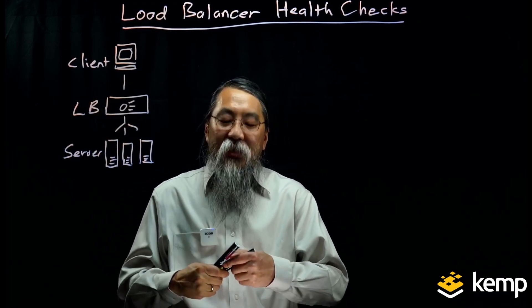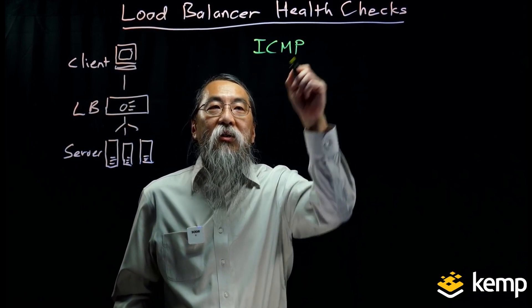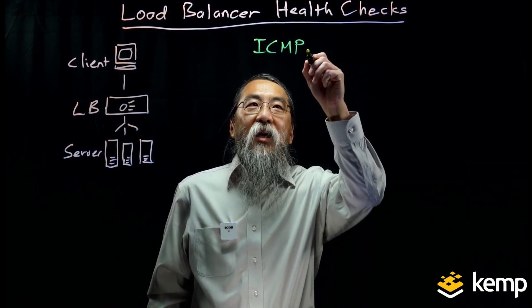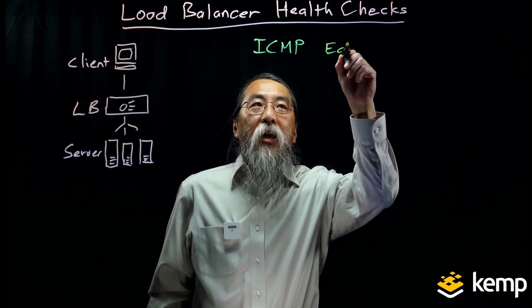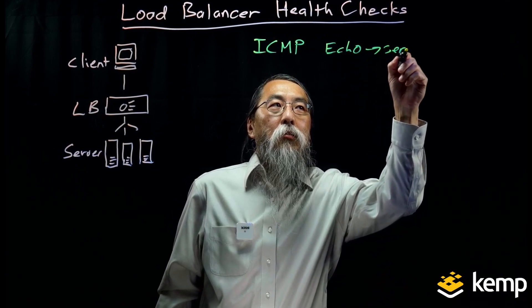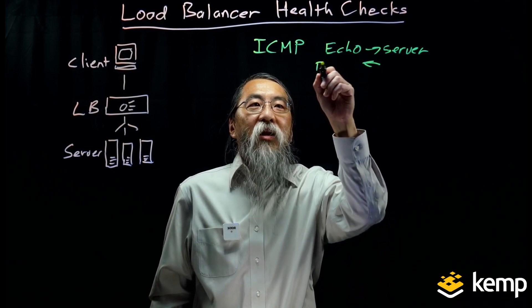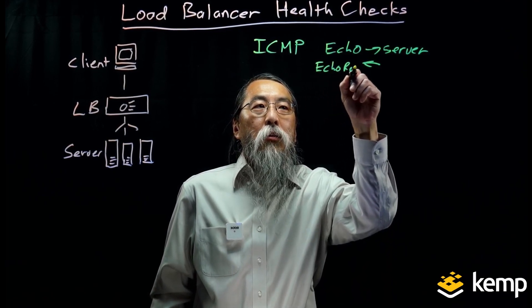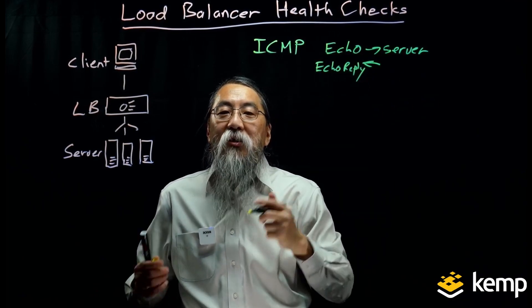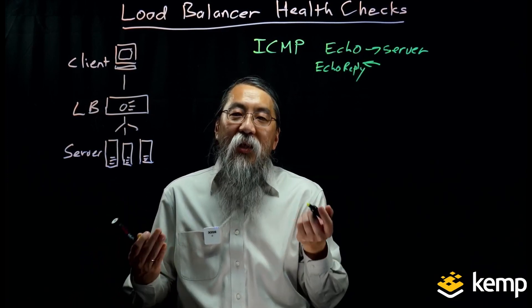The load balancer starts by doing something simple — it does an ICMP health check. It makes a connection to the server using ICMP, a simple echo to the server, and then gets a response of an echo reply. Once it sees that, it knows that the server is on the network and ready to accept connections.